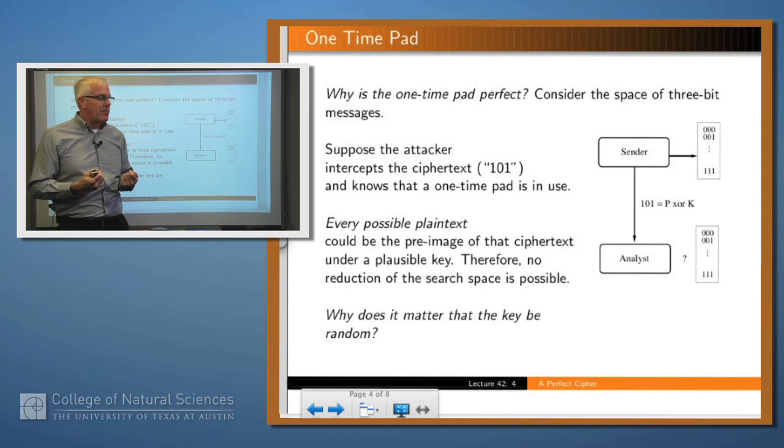Now, why does the key have to be random? Well, imagine that you knew something about the key—for example, you knew that it had even parity, that is, contained an even number of 1-bits. Well, if you work backwards, you could take the ciphertext and that fact and eliminate half of the possible plaintexts. And so it would no longer be a perfect cipher. And so you have to know absolutely nothing about the key except that it was generated randomly.